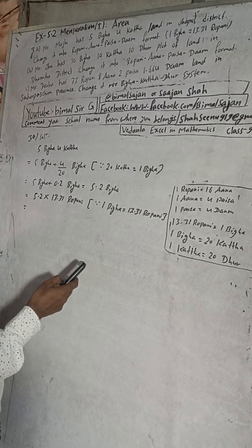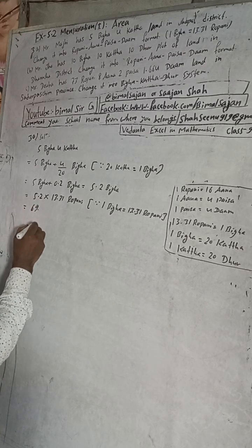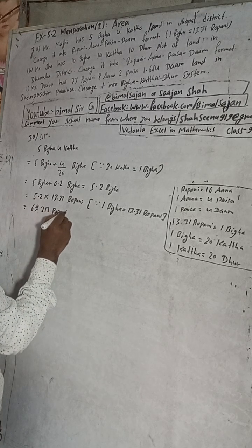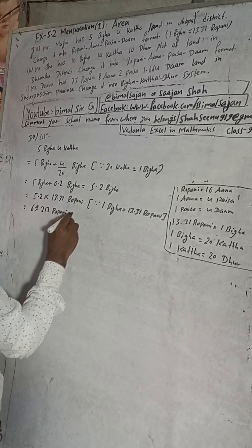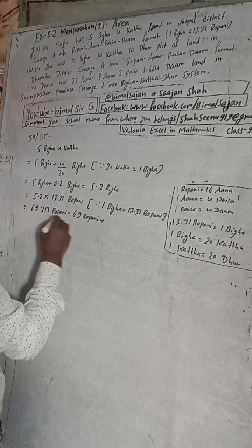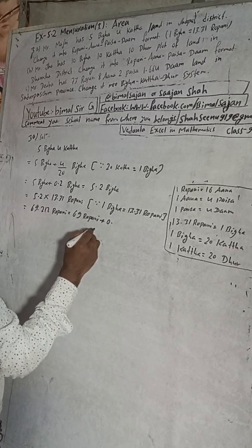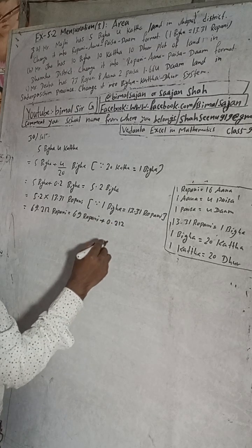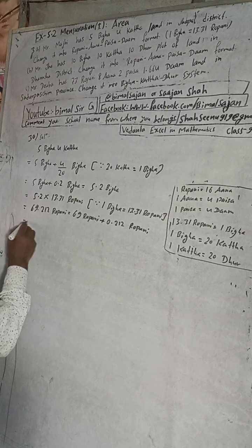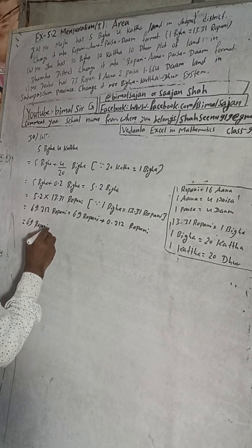So the result is 69.212. This is now 69 ropani plus 0.212. We now have 69 ropani and we need to convert the remaining 0.212 into ana.